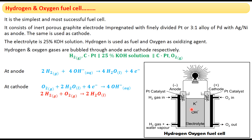The electrolyte used is a 25% KOH solution. Both electrodes are connected through a wire with a load (a bulb) applied. Hydrogen acts as the fuel and oxygen acts as the oxidizing agent in this hydrogen-oxygen fuel cell.